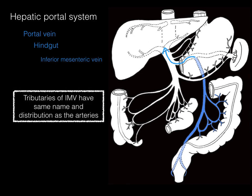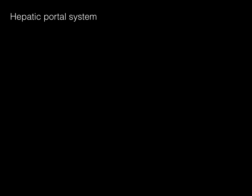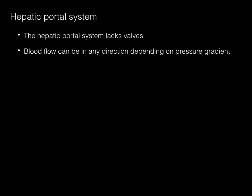The tributaries of the inferior mesenteric vein have the same name and distribution as the arteries. Importantly, the hepatic portal system lacks valves, and as a result blood flow can be in any direction depending on the pressure gradient.